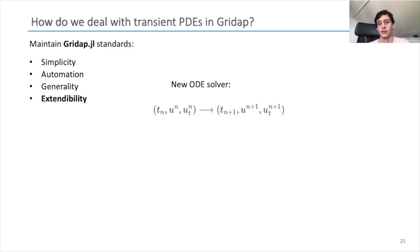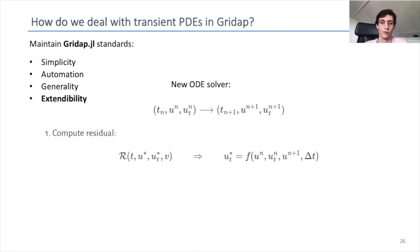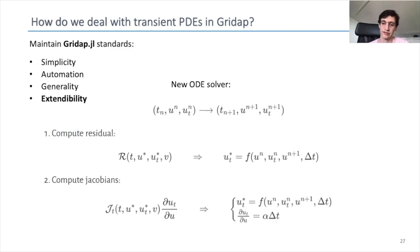About extendability: if a user wants to define a new ODE solver, we want to make it simple. A new ODE solver is nothing else than a map from a given time and state of the unknowns to the new state at time t plus one. To define this map we just need a few things: we need to be able to compute the residual, which boils down to having an expression of a certain time derivative at a given point in the interval, along with an explicit expression of that time derivative. For the Jacobian, apart from this explicit expression, we need to know how the time derivative relates to the unknown itself, and usually this is just a scaling factor times the time step size. These are the two things a user will have to implement to define a new ODE solver.